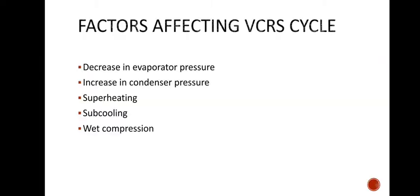In this lecture we will see that if we make some modifications in the cycle, what effect it has on the parameters — like the refrigeration effect of the system, what changes will happen, and how the performance will be affected. First we will see what factors are affecting the VCR cycle, point-wise: decrease in evaporator pressure, increase in condenser pressure, superheating, subcooling, and wet compression.